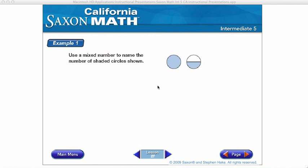Okay, so we all know how to write a mixed number. For example 1, use a mixed number to name the number of shaded circles shown. So here I have one full circle and then I have half of a circle. So my mixed number is one and a half.